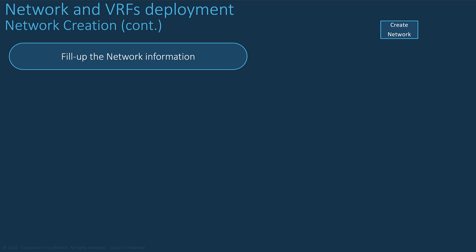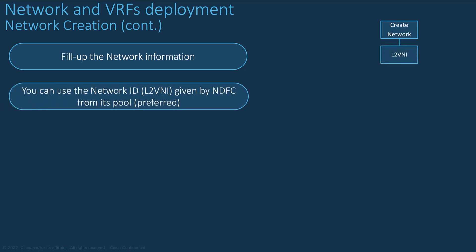Now let's go into the workflow. Select the topology overview of your fabric. You need to select the multi-site domain scope if the overlay network concerns multiple sites. Select the Network tab and from the action drop-down menu, create a network.